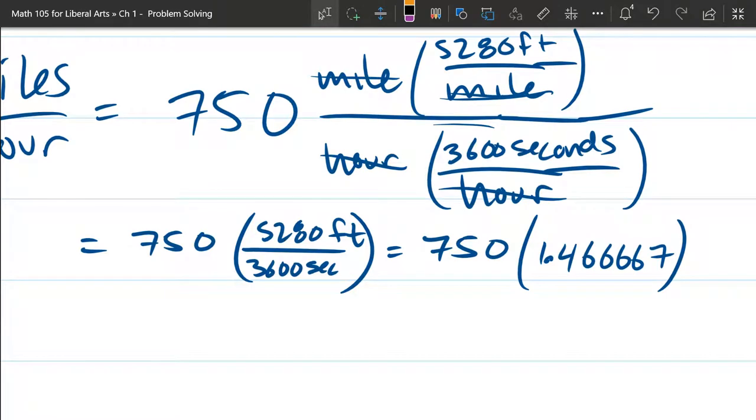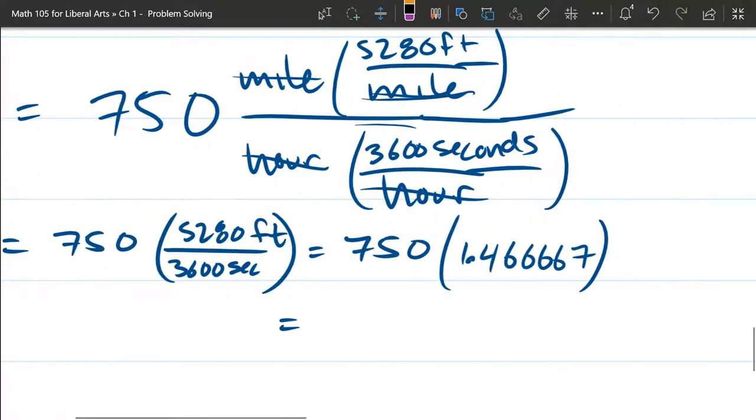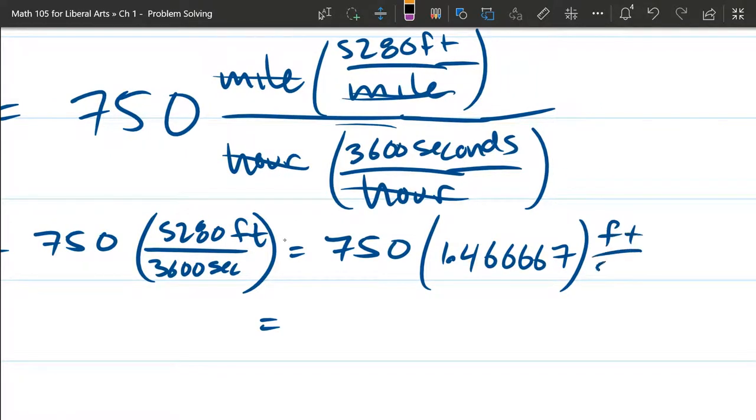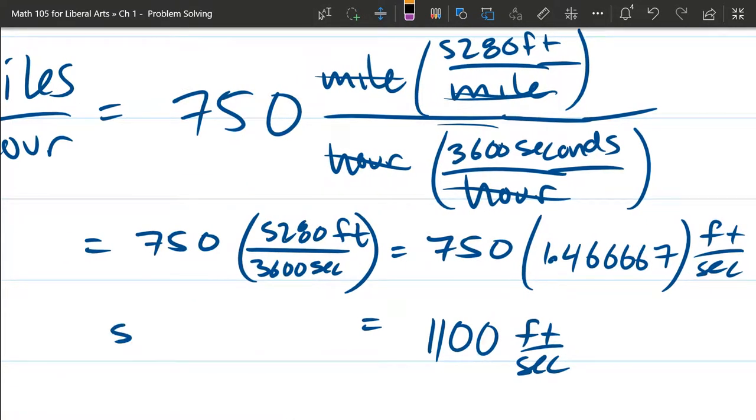And now I'm going to multiply this by 750. If you're using a calculator, you actually can keep a lot more decimals very easily. And on this next step, oh, and I left the units off, that's feet per second. And the next, we get 1,100 feet per second. Alright, this is the speed of sound.